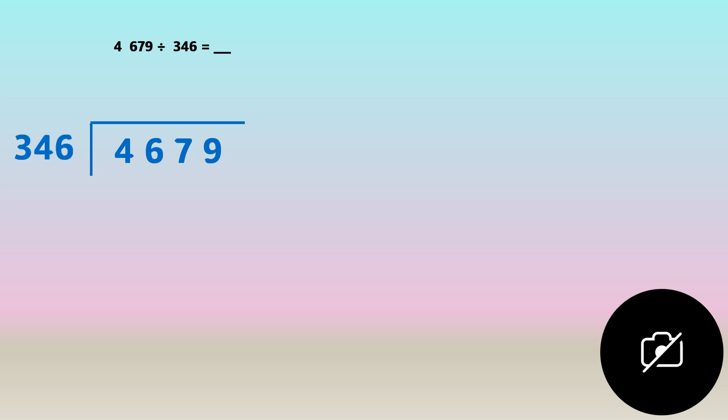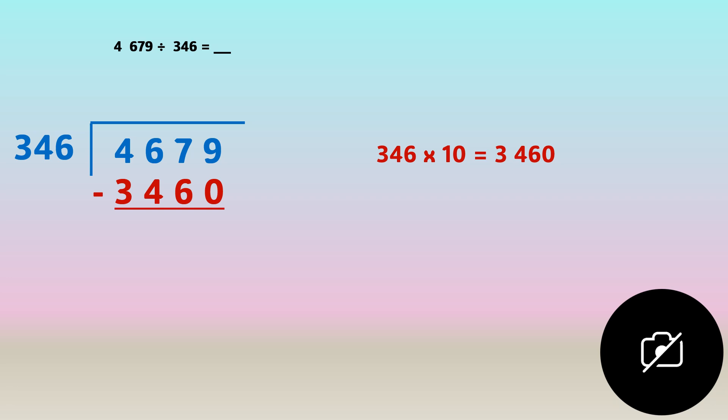Now we're going to try dividing three to four digits by three digits. We set up our division sum. This time we're going to start with ten because the divisor has three digits and the dividend is only four digits — using a hundred would give thirty four thousand six hundred, which is too large. So we try ten. Three hundred and forty six times ten is three thousand four hundred and sixty, which is pretty close. We subtract it and write ten on the side. That leaves one thousand two hundred and nineteen.